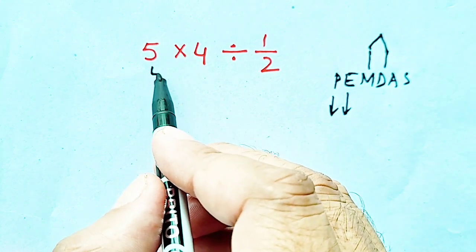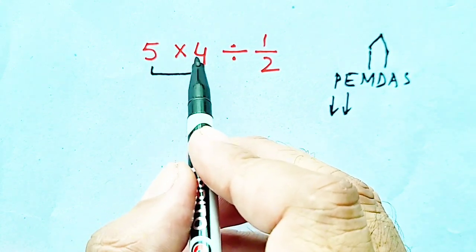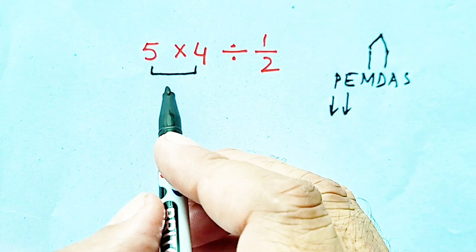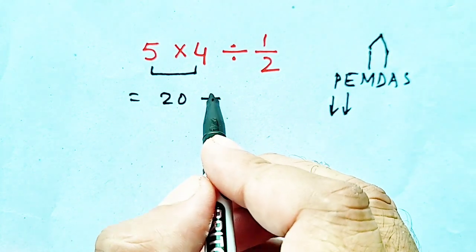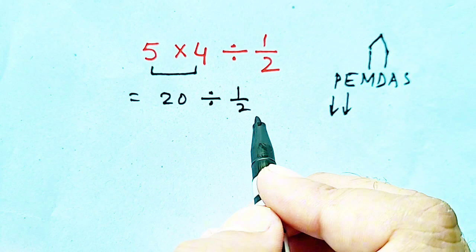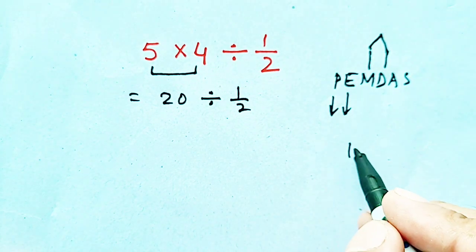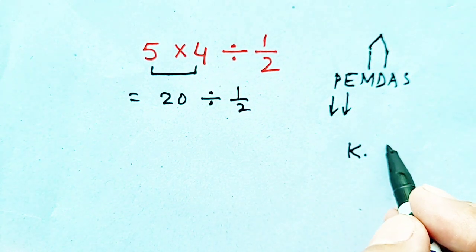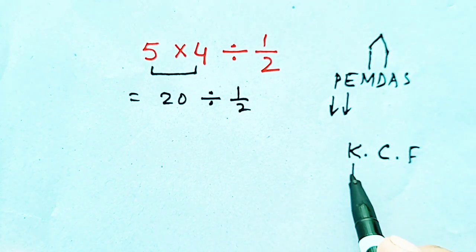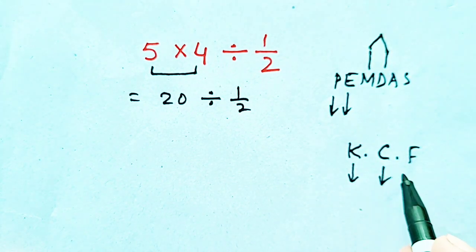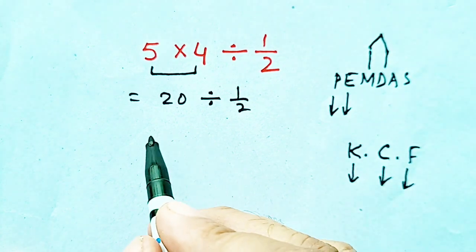is at left. So 5 times 4 will be solved first, so it will be 20 divided by 1/2. Now we have to use the KCF rule: Keep, Change, Flip, so